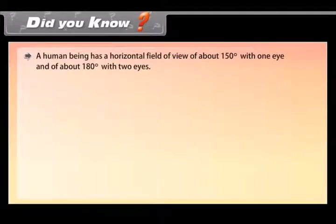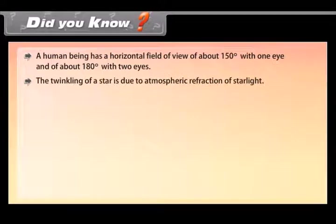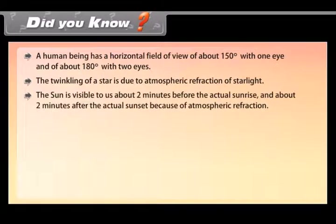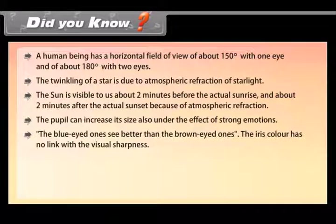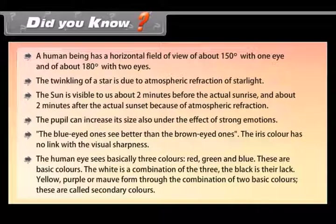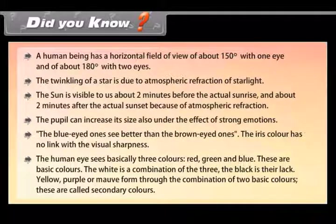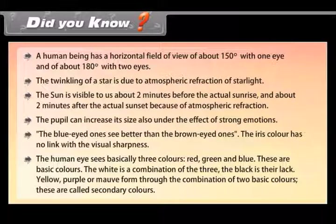Did you know? A human being has a horizontal field of view of about 150 degrees with one eye and about 180 degrees with two eyes. The twinkling of a star is due to atmospheric refraction of starlight. The sun is visible to us about two minutes before actual sunrise and about two minutes after actual sunset because of atmospheric refraction. The pupil can also increase in size under the effect of strong emotions. The human eye sees basically three colors — red, green, and blue — which are the primary colors. White is a combination of the three; black is their absence. Yellow, purple, and mauve are formed through the combination of two primary colors and are called secondary colors.